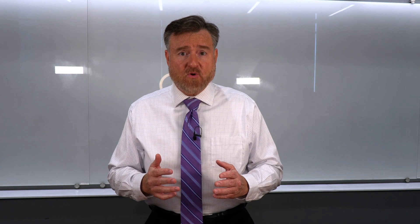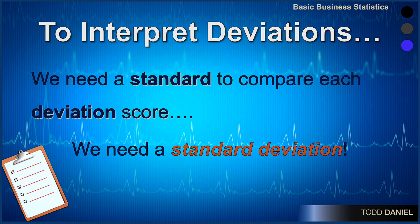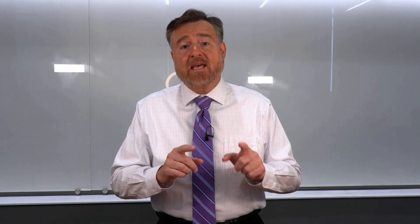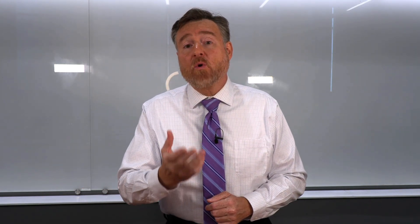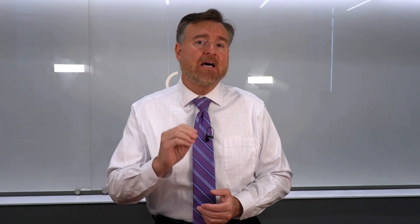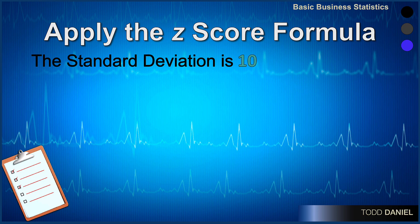Now we have deviation scores — but how can we compare them? Well, again, we need some kind of standard of the deviation. What is the typical amount of deviation? We need a standard deviation. We already know how to calculate standard deviation, but we're not going to calculate it on this very small sample of three. Instead, we go to the manual again and find that the standard deviation for this test is 10.